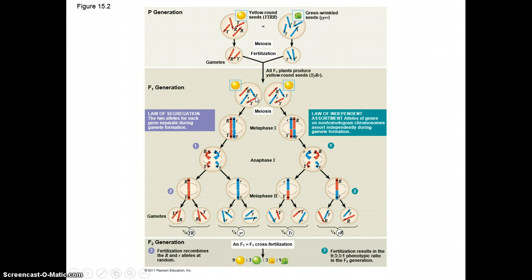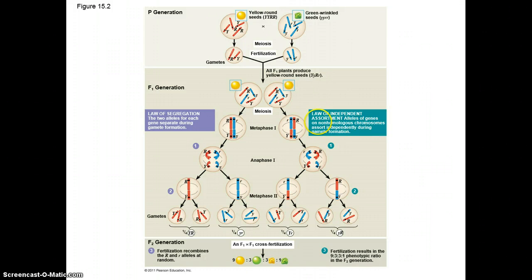The law of segregation tells us that two alleles for each gene separate during gamete formation. Here we have the two alleles for this small gene on the blue chromosome, and it's going to separate during gamete formation so that only one allele ends up in each cell. The law of independent assortment tells us that alleles of genes on non-homologous chromosomes assort independently during gamete formation. You can see how the red chromosomes line up with the red homologous pairs on the left and the blue on the right.